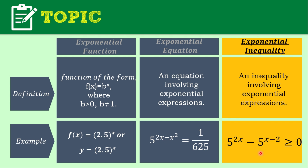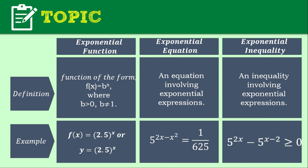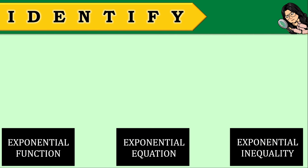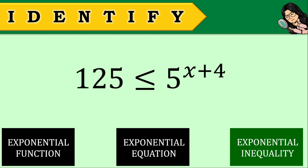This is the summary of the 3 important terms for this session. To check your understanding, let's scrutinize these items and identify if each is an exponential function, an exponential equation, or an exponential inequality. First: 125 is less than or equal to 5 raised to the power of X plus 4. This is an exponential inequality because of the presence of the inequality symbol and it consists of exponential expressions.